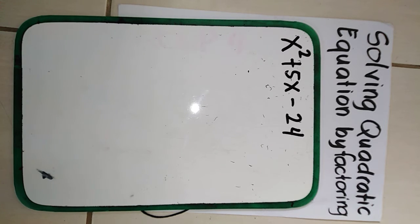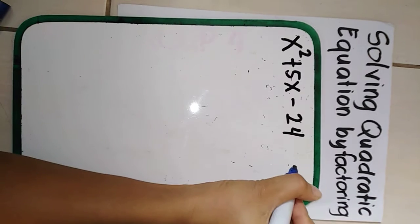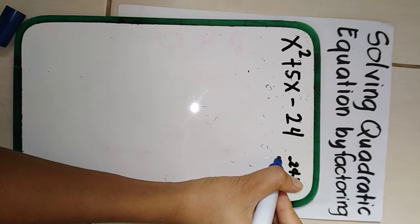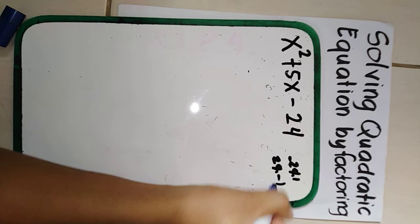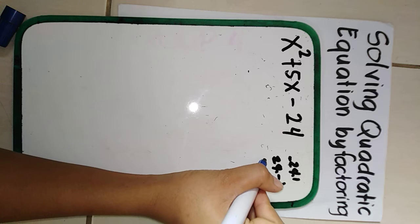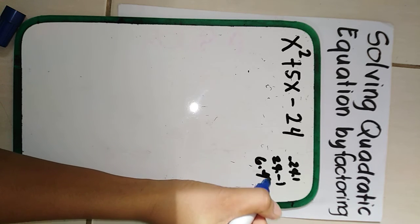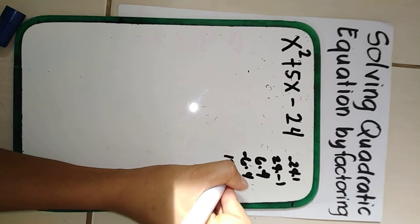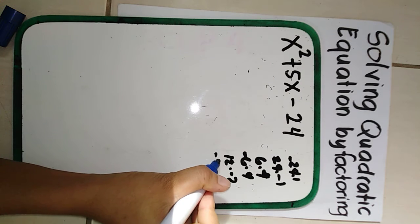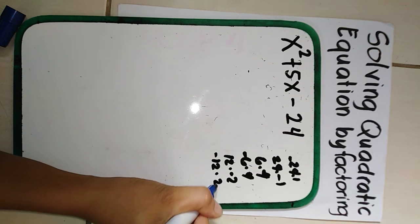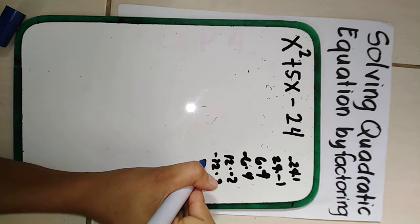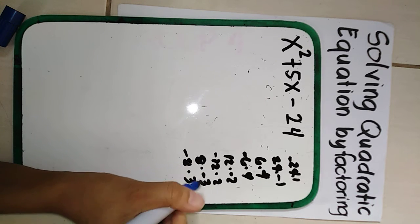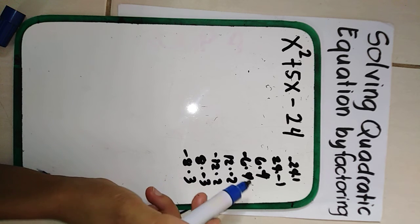The factor pairs of negative 24 are: negative 24 and 1, 24 and negative 1, 6 and negative 4, negative 6 and 4, 12 and negative 2, negative 12 and 2, 8 and negative 3, and negative 8 and 3. These are the factors of negative 24.